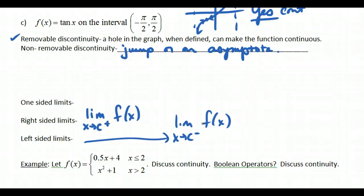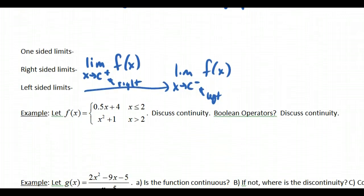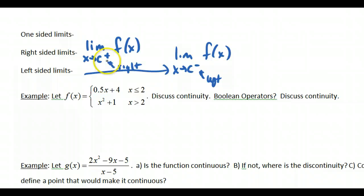X approaches negative 2, negative, oh, well, just think of that as being the left-sided limit. Okay, so that helps you with the left. And this one is the right. So if the overall limit exists, remember that the limit from the right has to equal the limit from the left.